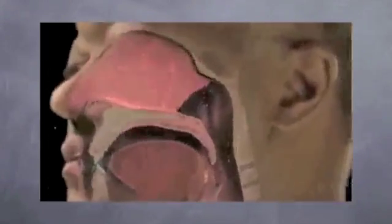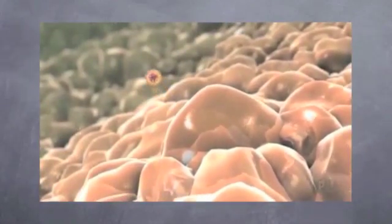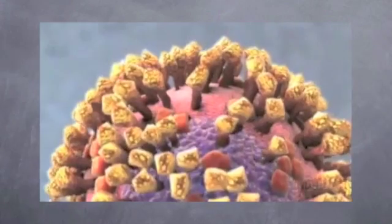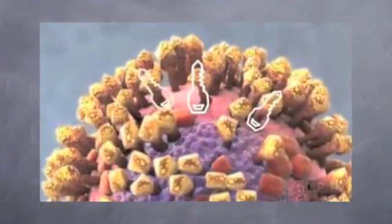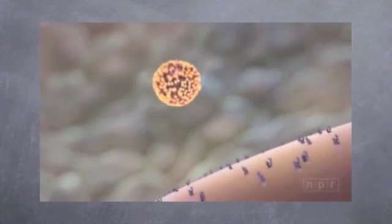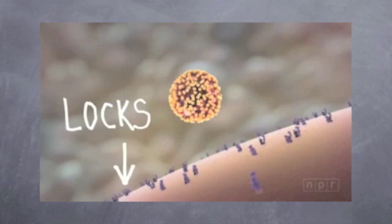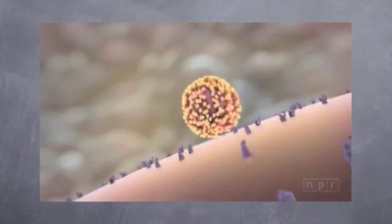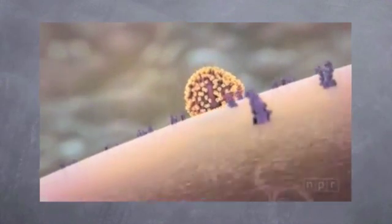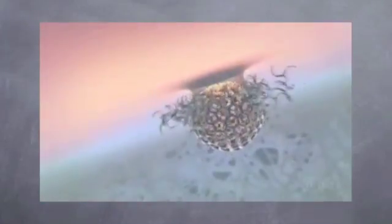Viruses are found in almost every ecosystem on earth and are the most abundant type of biological entity. The virus shown here is influenza. Influenza viruses are spread by coughing and sneezing. In plants, viruses are spread by insects that feed on sap, such as aphids. Another example is HIV, which is transmitted through sexual contact and by exposure to infected blood. Viruses can infect only a limited range of hosts, called the host range, which can be narrow or broad.